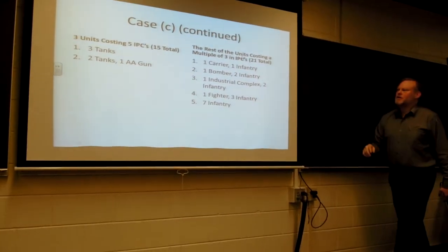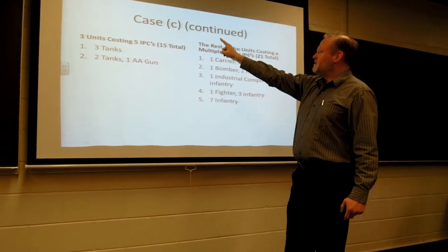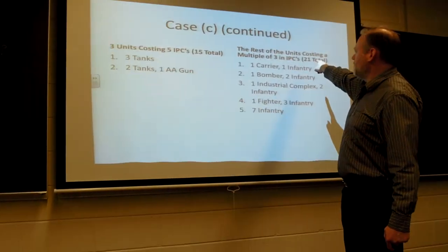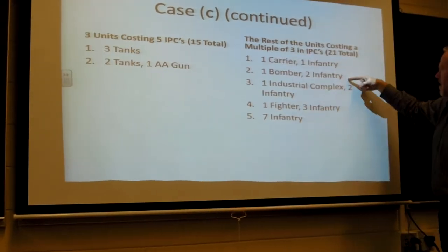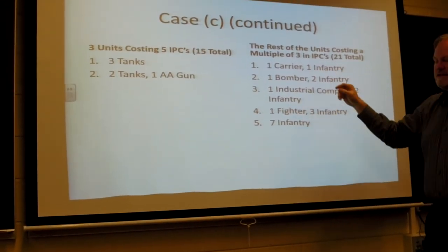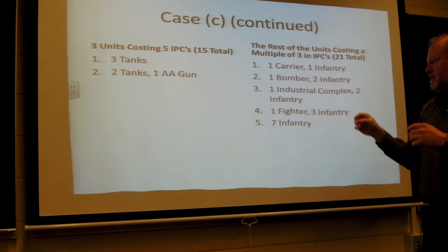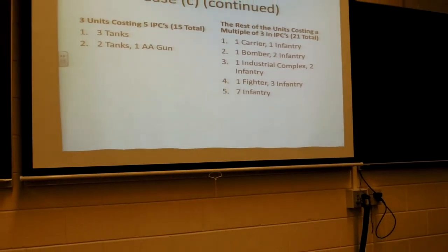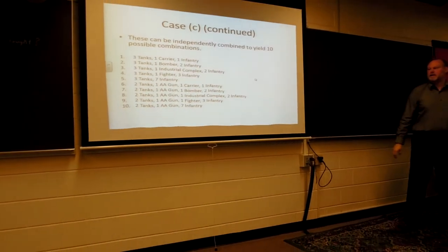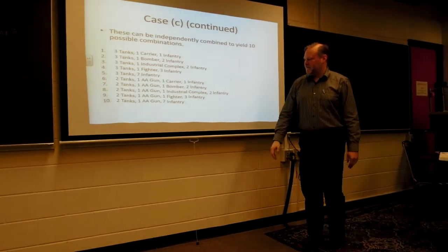Three units for the cost of five, which is $21 available. These can be done independently of these five possibilities. So when you throw them all together, there's ten possibilities with a cost of 15 and 21. And here are the ten different combinations.